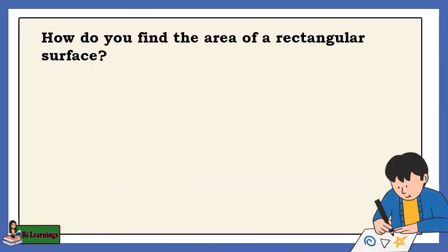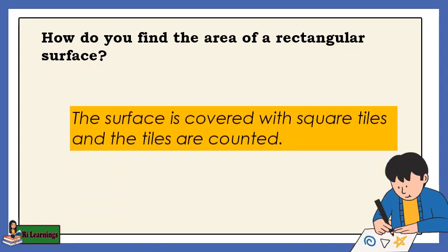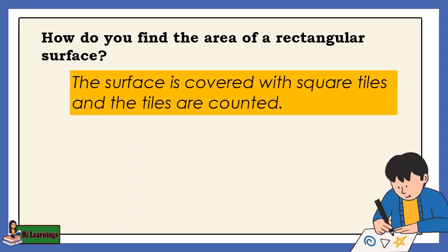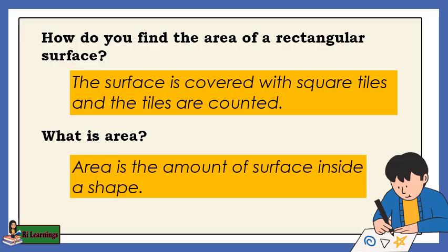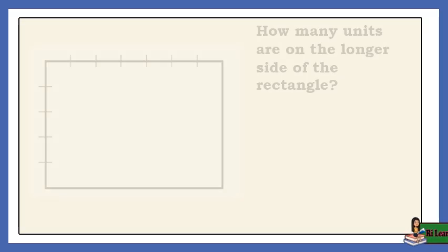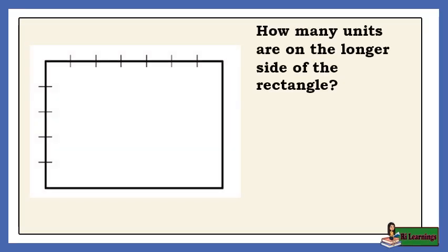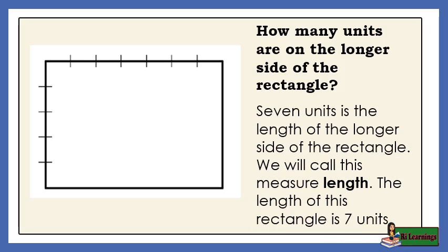How do you find the area of the rectangles? The surface is covered with square tiles and the tiles are counted. Area is the amount of surface inside a shape. How many units are on the longer side of the rectangle? 7 units is the length of the longer side of the rectangle. We will call this measure length. The length of this rectangle is 7 units.